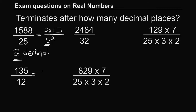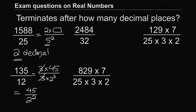For the second problem: after cancelling the common factor of 3, the denominator is 2^2. The power of 2 is raised to 2, so this decimal expansion will also terminate after 2 decimal places.